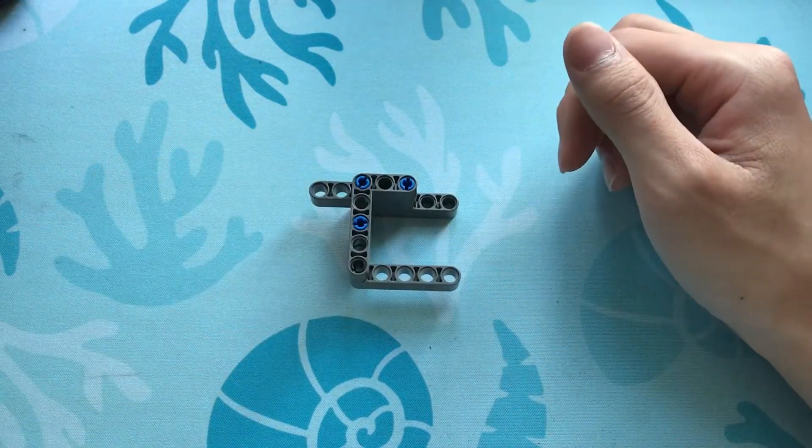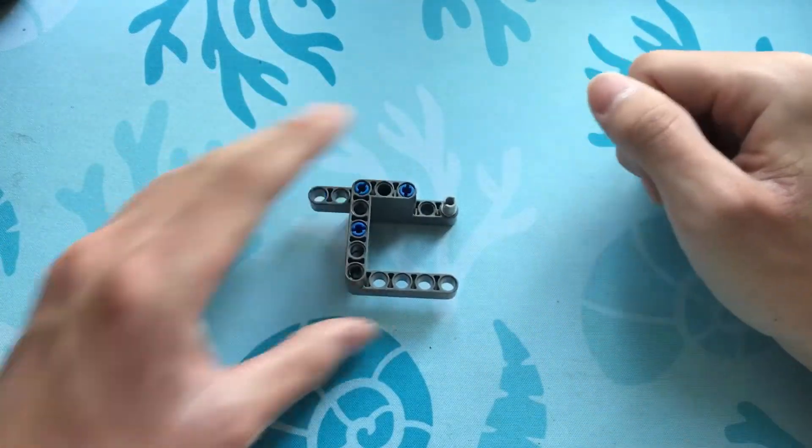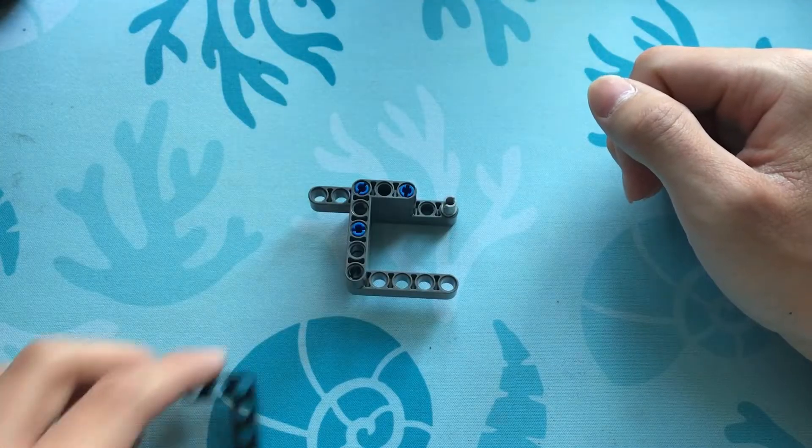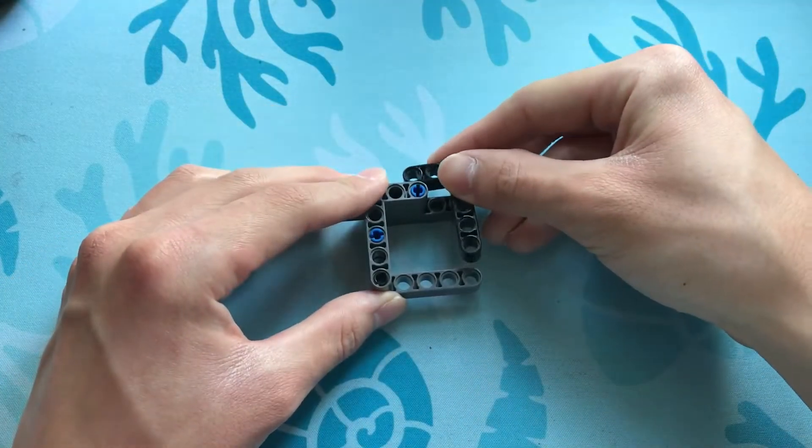Last, let's build the door part. Let's take a frictionless pin and insert it right here. And then we'll connect our door, another 3x5 L beam, right here, like that.